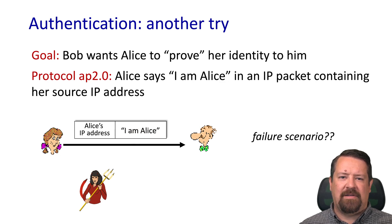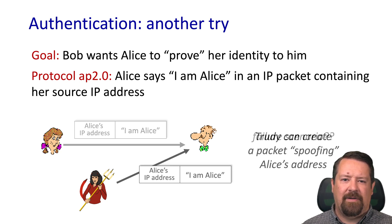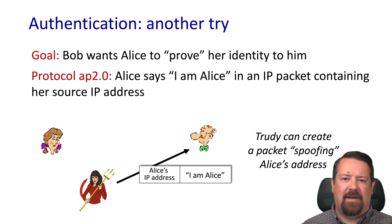Let's put this in the context of a network packet. We have 'I am Alice,' and in the header of that packet we have Alice's source IP address. The problem? The attacker can also generate a packet and spoof Alice's source IP address. There may be some places in the network where this won't work, but in general, attackers can spoof IP addresses. So that is not a reasonable authentication method.